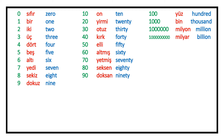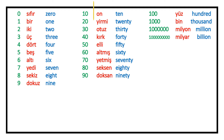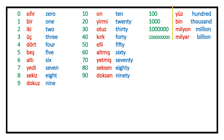Let's quickly repeat them all. 30, 40, 50, 60, 70, 80, 90, 100, 1000, milyon, milyar.